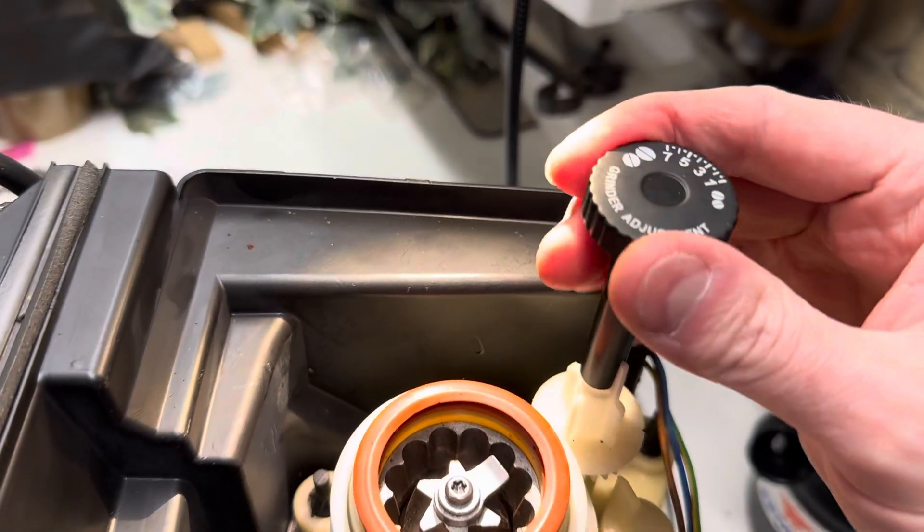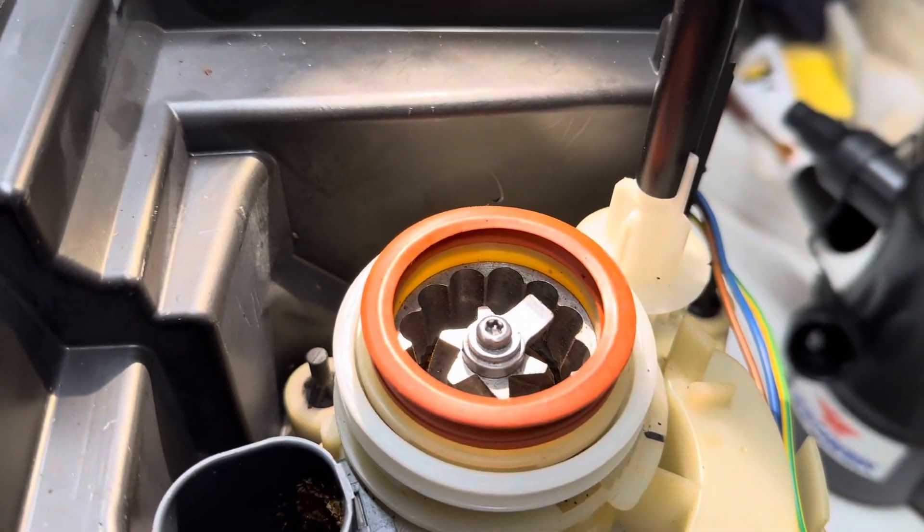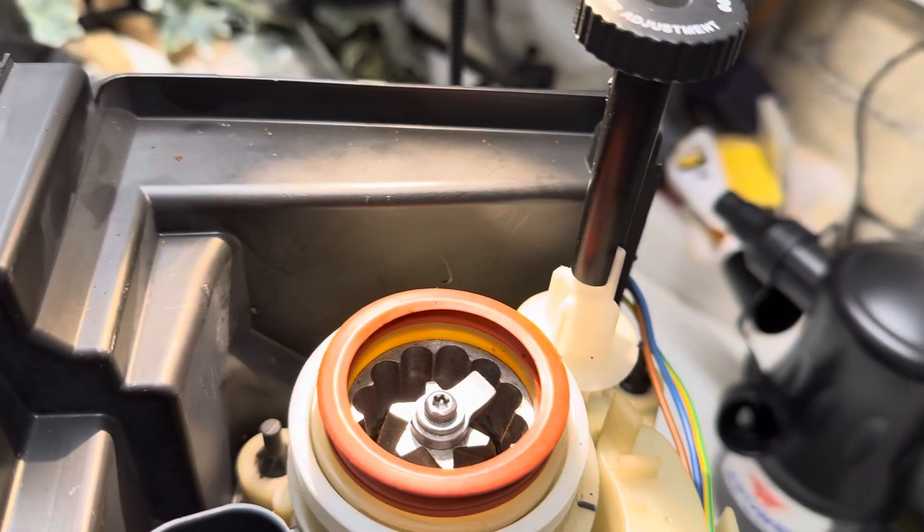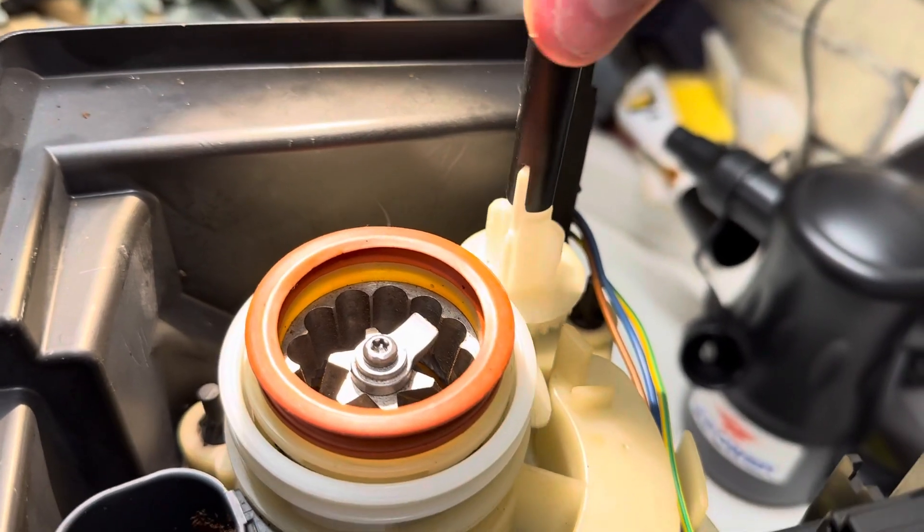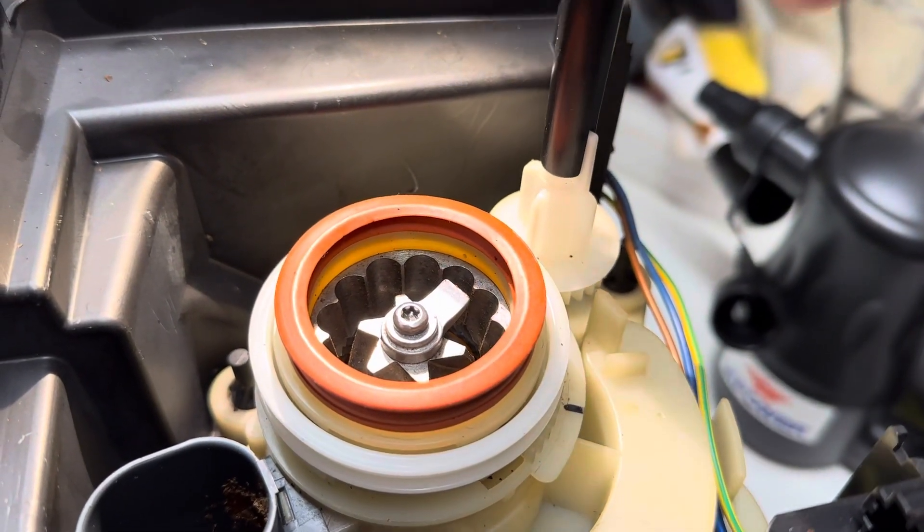I was setting the grind to the smallest setting, number one, but it was still far too coarse, and I couldn't figure out what was wrong. The adjustment mechanism works fine - it goes up and down with a bit of pressure, as you can see.